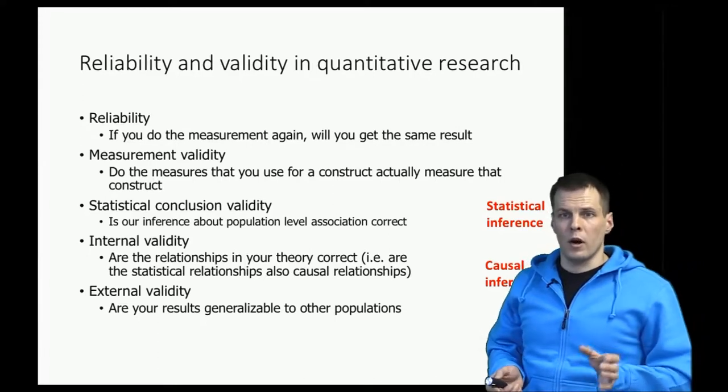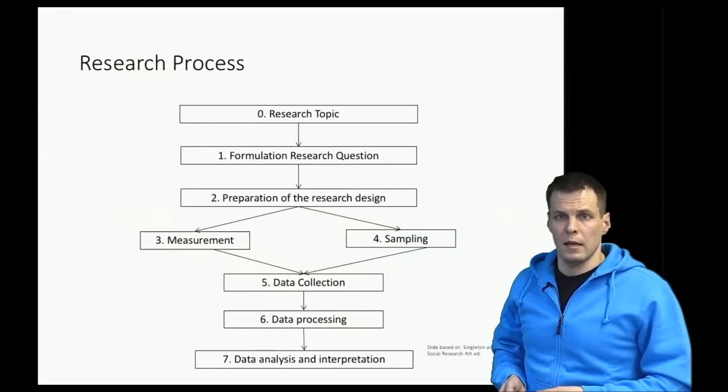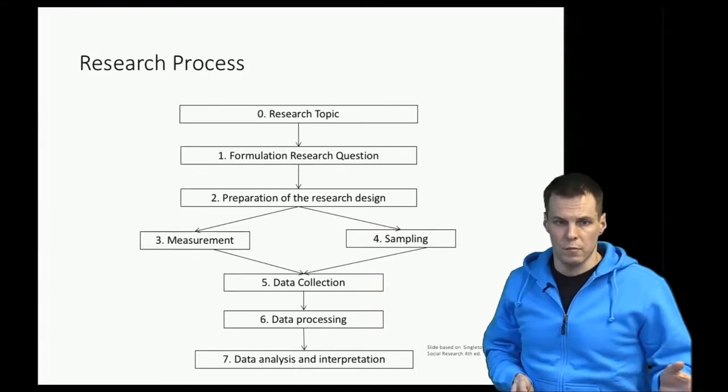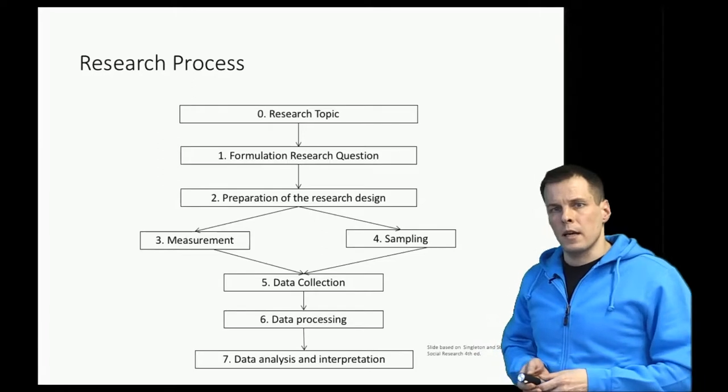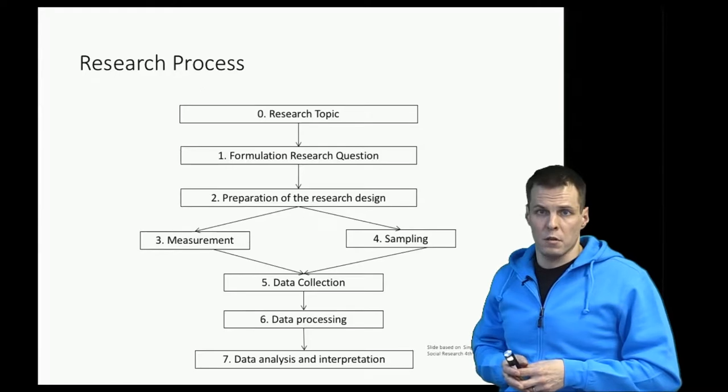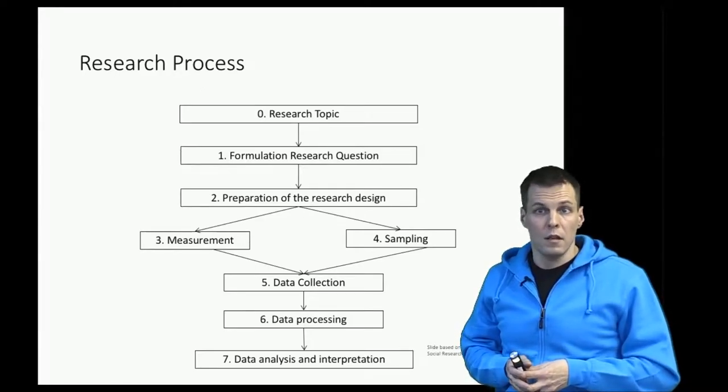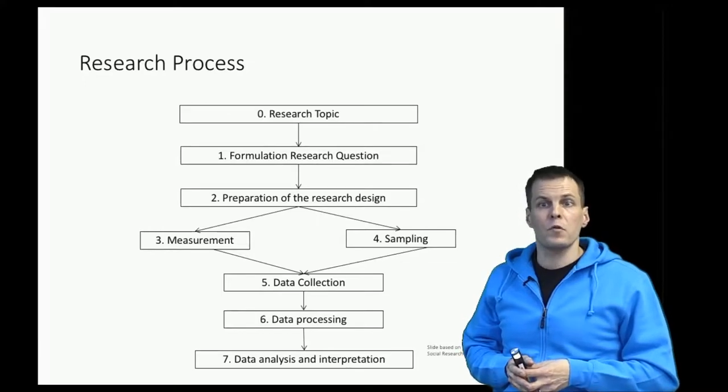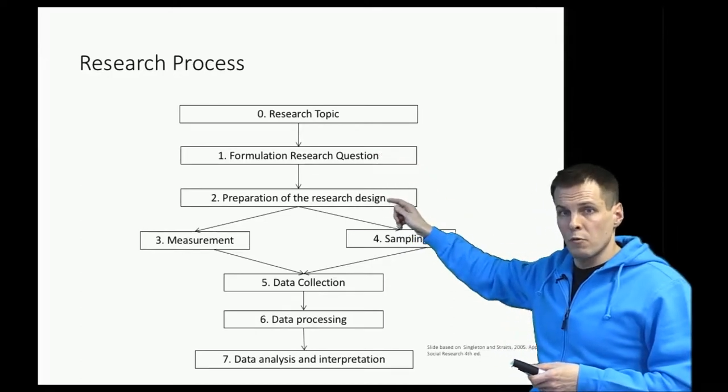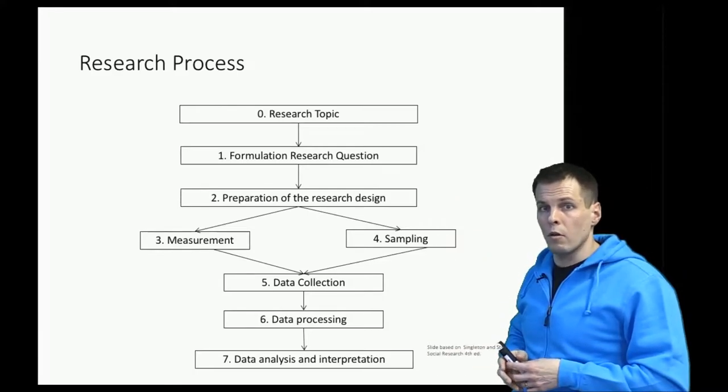So what determines the quality of a research study is an interesting question and it can be examined through the research process according to Singleton and Straits' book. They say that our research always starts with the research topic and formulating of a research question. Of course, your study is not very valuable if the research question is not interesting, but we will be focusing on the empirical part. After you have your research question set, then you start to prepare your research design, which has two main components.